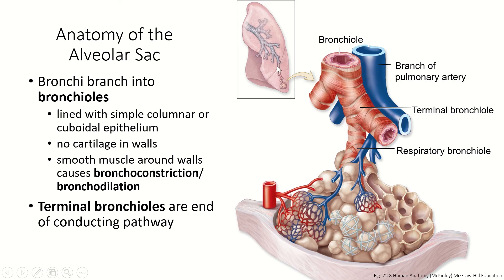At the end of each of those, the smallest branches are called bronchioles, and those end in these little alveolar sacs. We're looking at an alveolar sac with the connective tissue cut away, so we can see inside the sac these little bunches of alveoli. The bronchioles themselves are lined with just a columnar epithelium or cuboidal epithelium. They don't have cartilage in the walls — that's how you recognize the difference between bronchi and bronchioles. Bronchi have cartilage. The bronchioles also have smooth muscle wrapped around them.